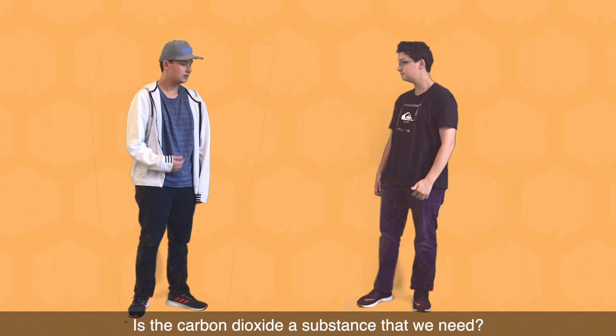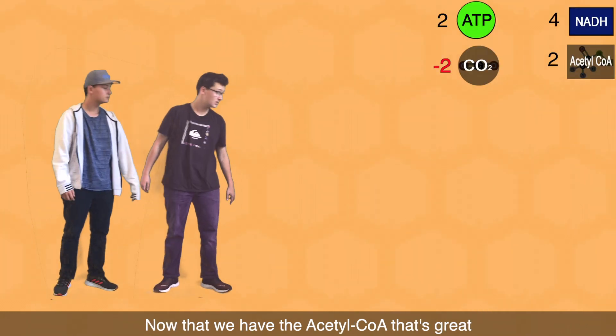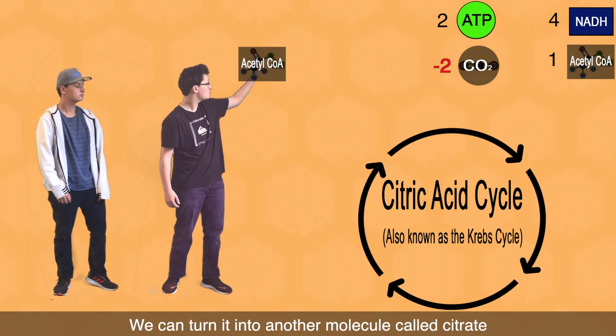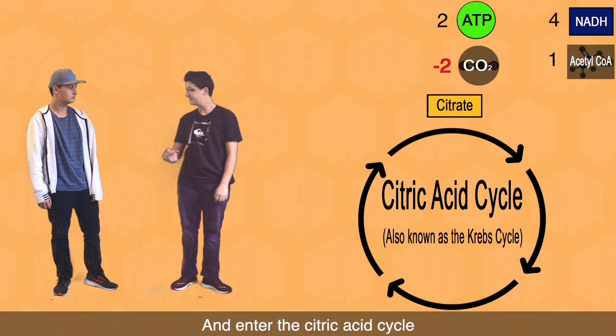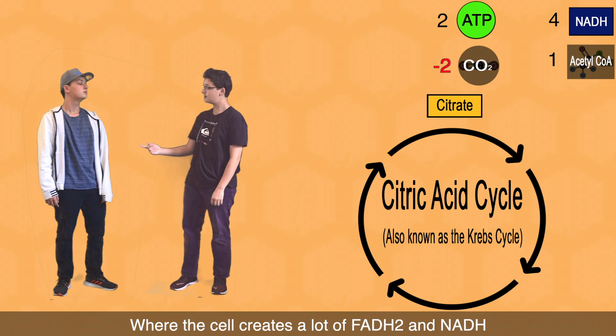Is the carbon dioxide a substance that we need? No, that's why we exhale it when we breathe. Now that we have the Acetyl-CoA that's great. We can turn it into another molecule called citrate. And enter the citric acid cycle. Where the cell creates a lot of FADH2 and NADH.